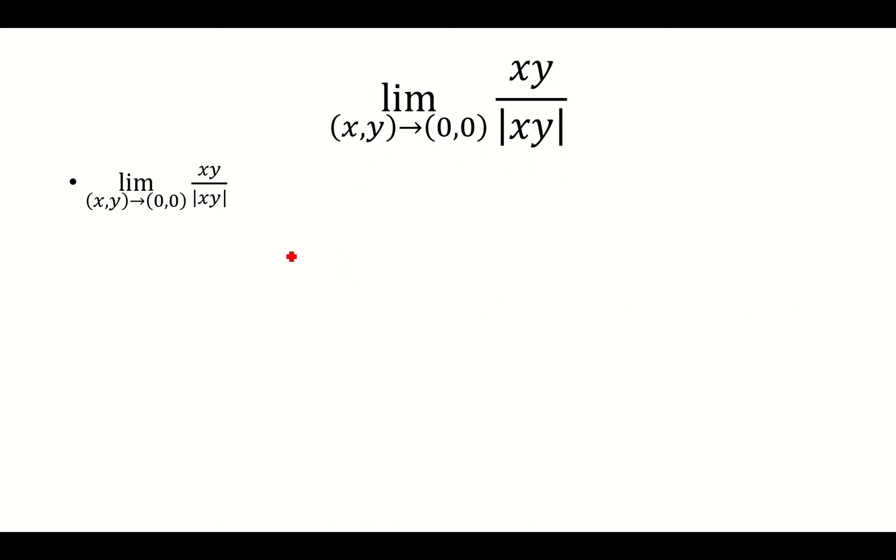Okay, let's look at the path here. y equals kx, where k does not equal 0. And we're just going to replace y with kx. Multiply it out. We have kx squared over the absolute value of kx squared.